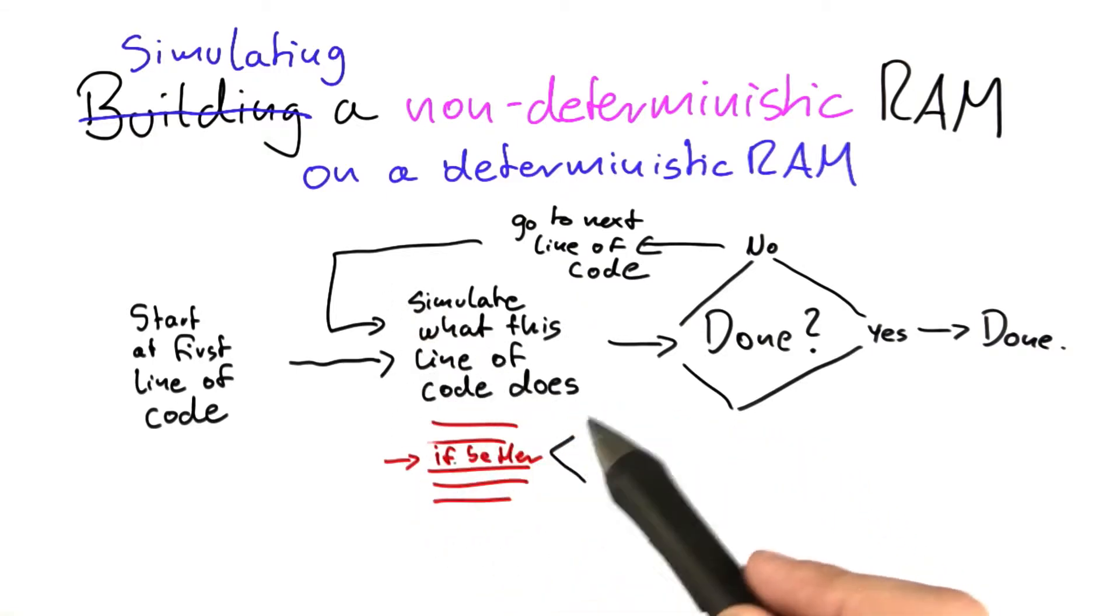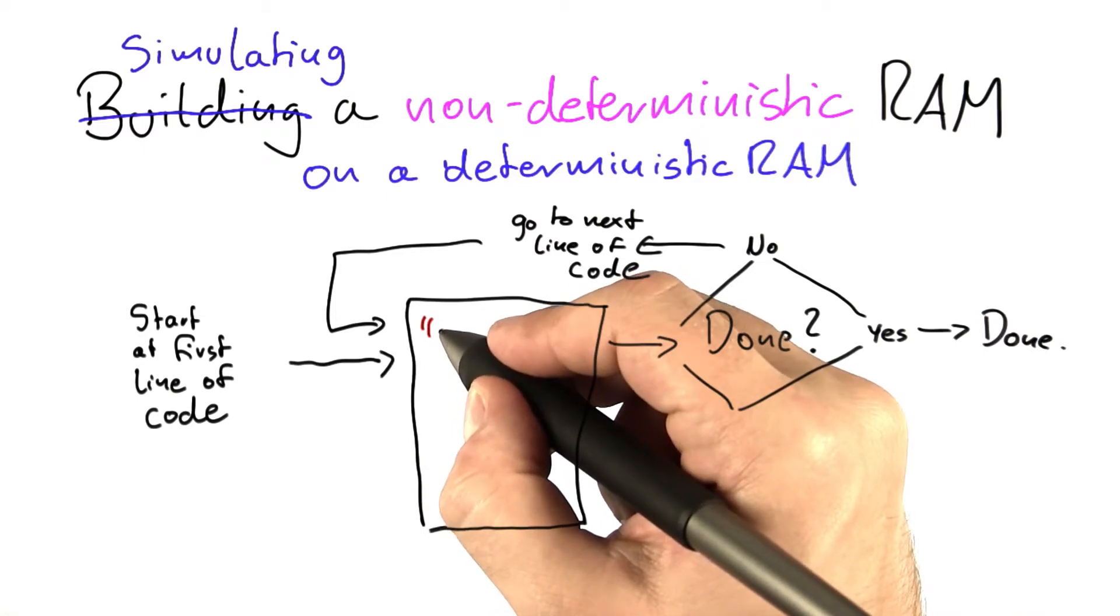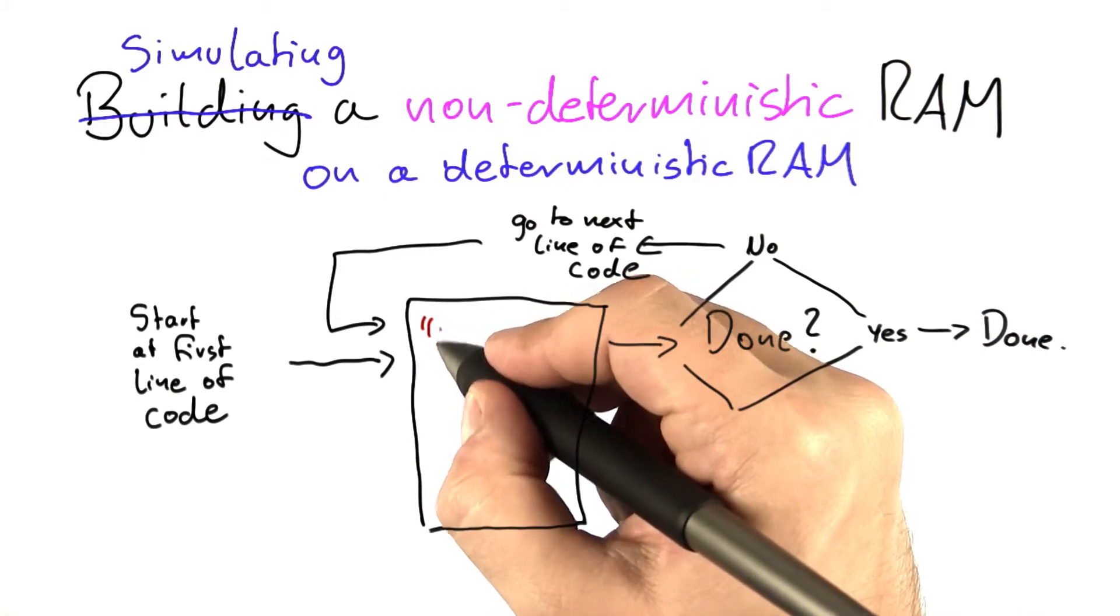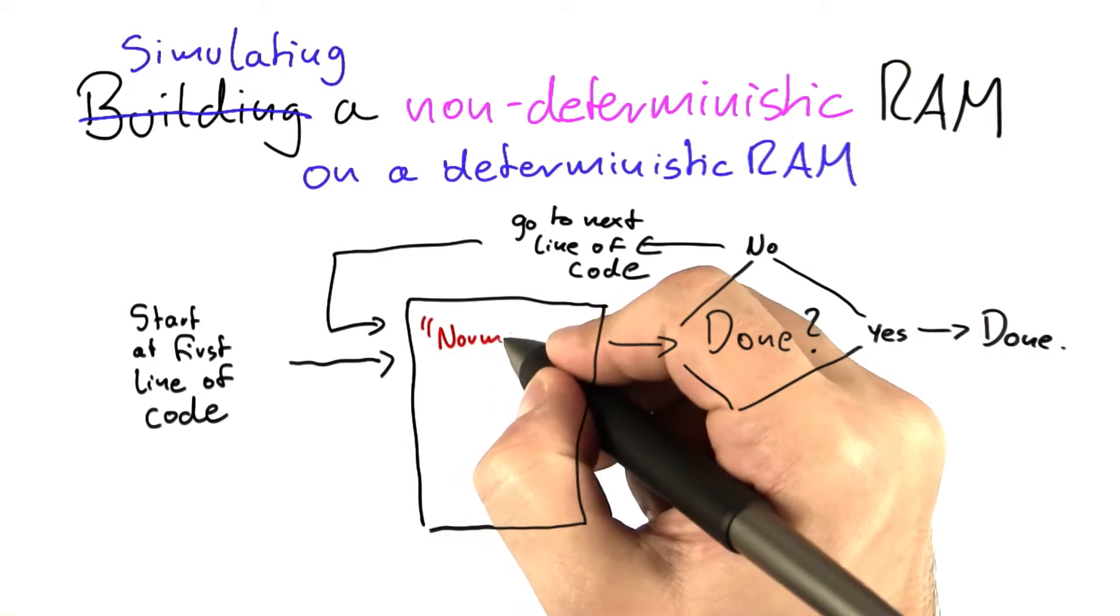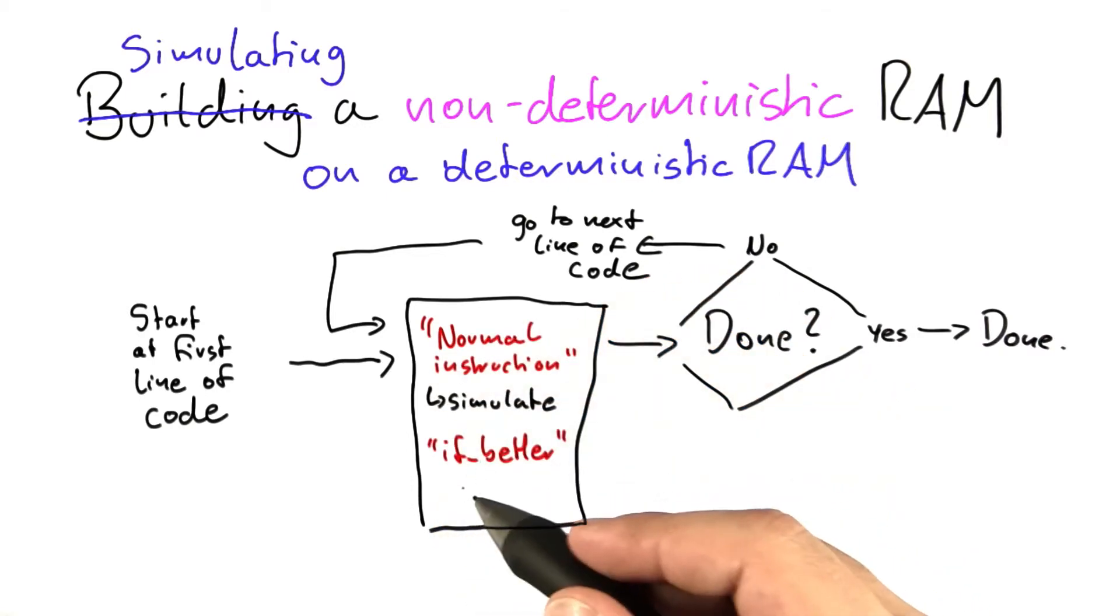So we have to work a little bit on this part here of the simulation. So we have to distinguish two cases. One is if we have a normal instruction, then we'll just do a simulation. But if we have an if better, then we don't know how the machine continues.